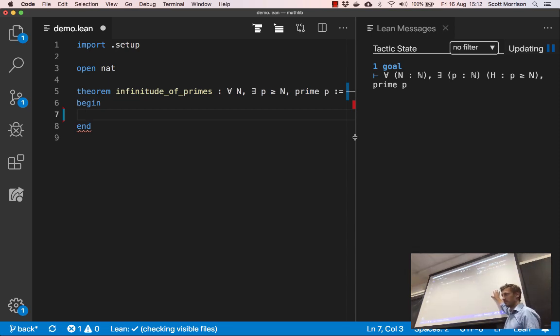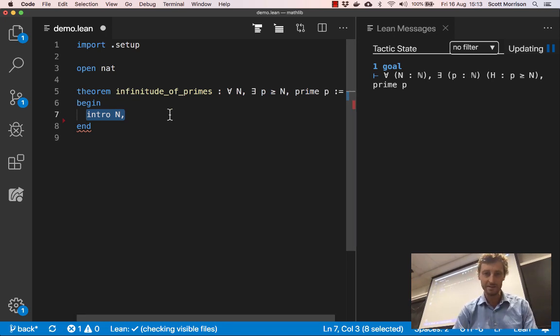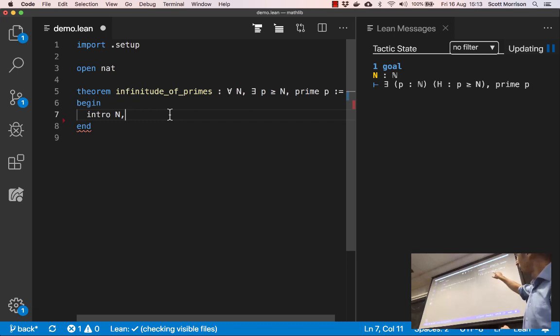So then the first interesting line is completely obvious and I think everyone can read it. It says theorem, there are infinitely many primes, and then there's a statement written just as anyone would write it. For all natural numbers, well I guess I left out that it's an actual number, for all n, there's a p bigger than n so that p is prime. Okay, that's an obvious statement that there are infinitely many primes. And now we're going to give a proof. What I've done is I've written a begin and an end. That's just like in LaTeX, your slash begin proof slash end proof, just in a different language. And as soon as I put the cursor inside that begin end block, there's this display over on the right half of the screen where the computer is telling me what it thinks is going on.